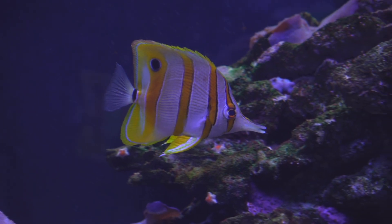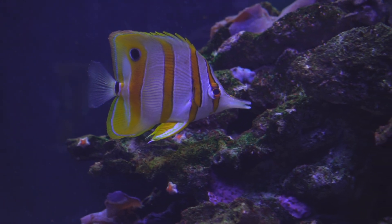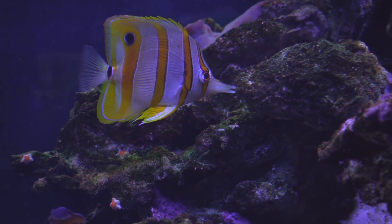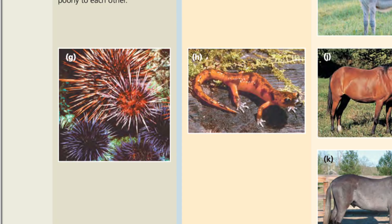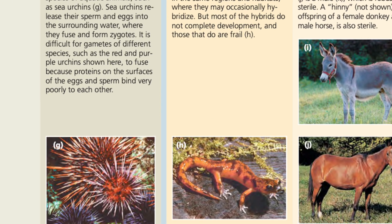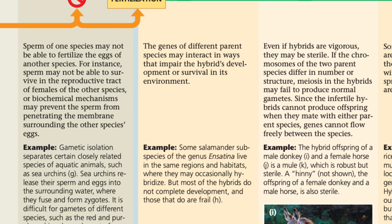Gametic isolation is very common in aquatic organisms because they have external fertilization, wherein females lay eggs and males fertilize them in a rock crevice or similar setting. Because mix-ups can happen from time to time, gametic isolation between two similarly related sea urchin species can block interbreeding, thereby reinforcing that species barrier.